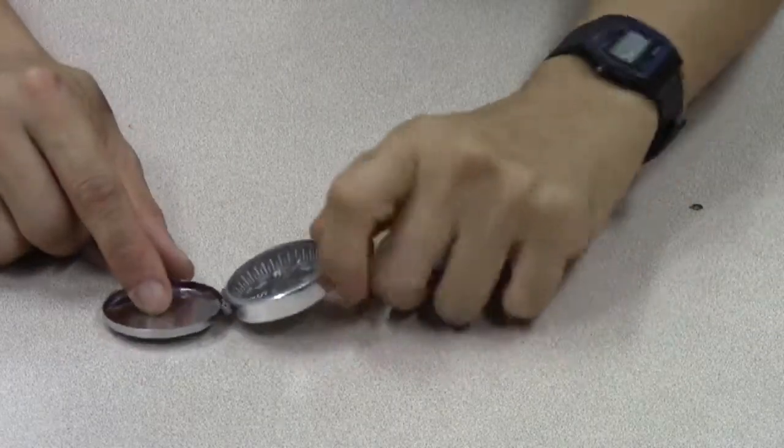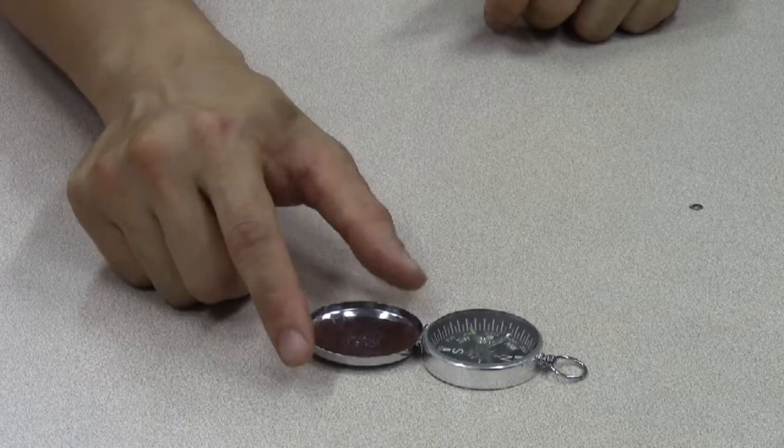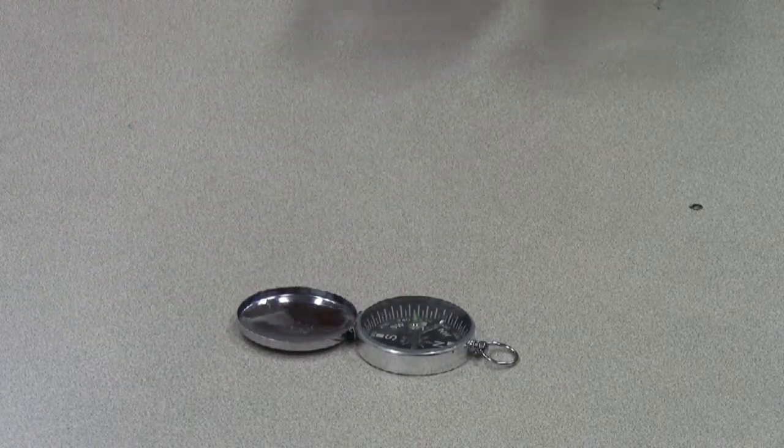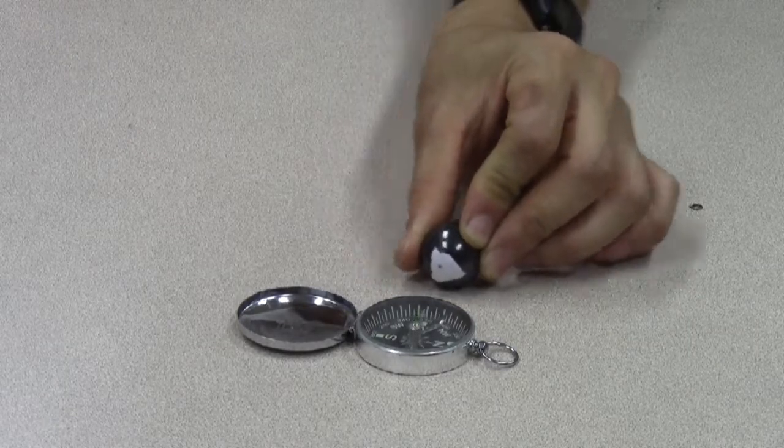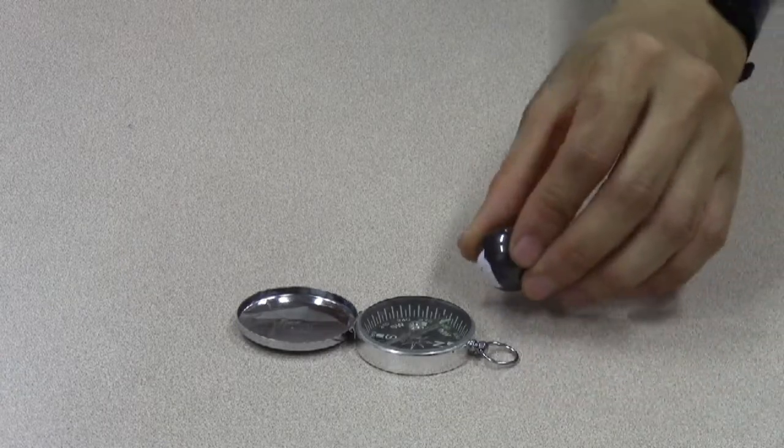And since the compass needle is actually a small magnet, if it points north, that end points north, and if you bring one end of the magnet near to it and it's attracted to that, that must be the south pole of the bar magnet.